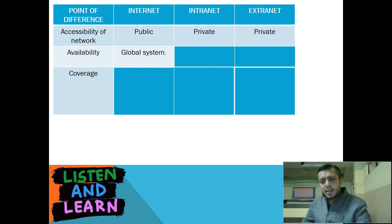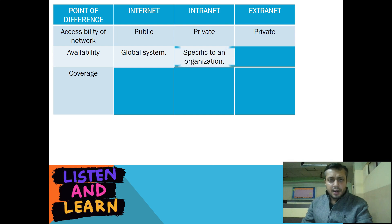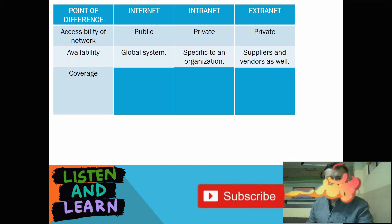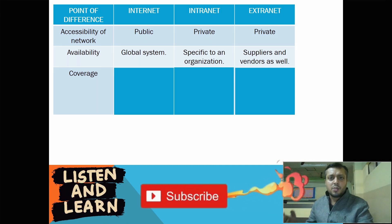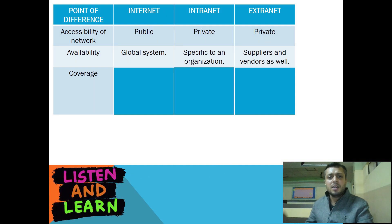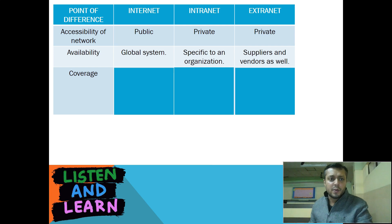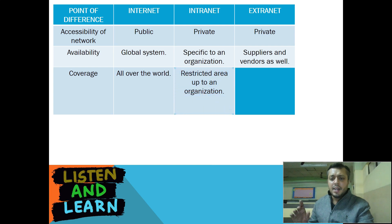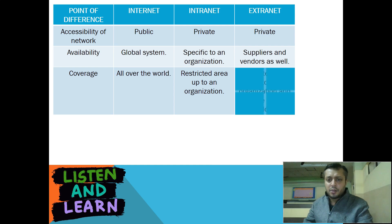If you talk about availability, internet is a global system — it is available worldwide. Intranet is specific to an organization. Extranet is also specific to an organization, but in addition the access of extranet is also given by the organization to its suppliers and vendors. Talking about coverage, internet is all over the world, whereas intranet's coverage is restricted to the area of the organization.